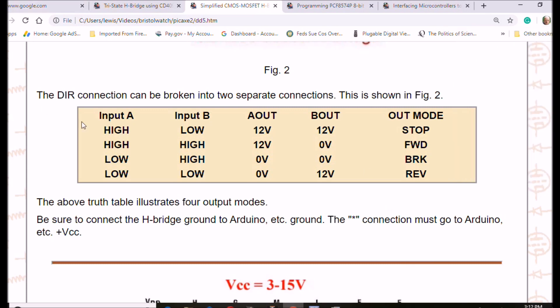Alright. If input A is high and B is low, A out is going to be 12, B out is going to be 12. It's going to be in the stop mode. It's like you've connected both sides of the motor to plus VCC.